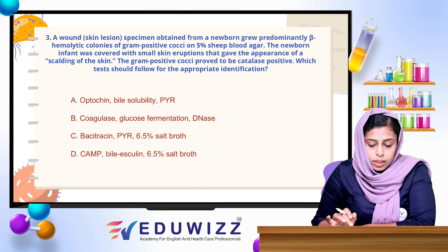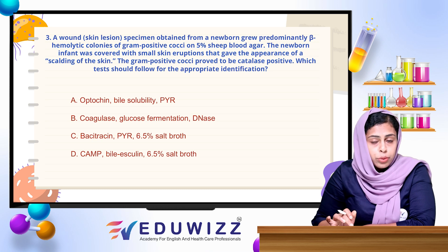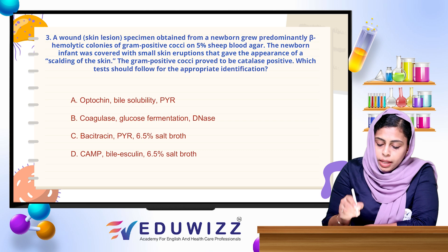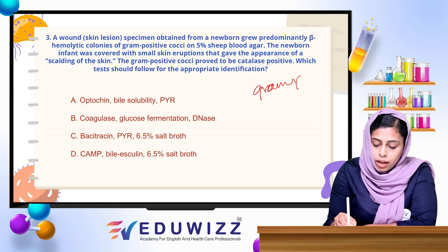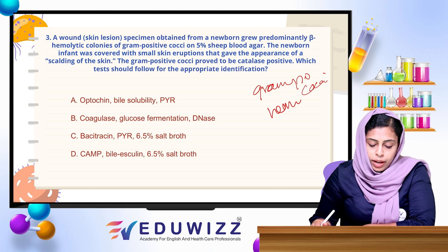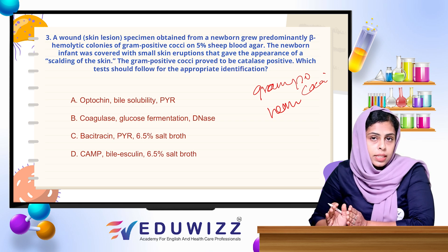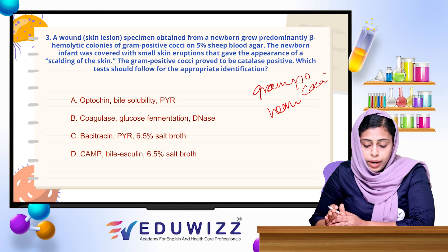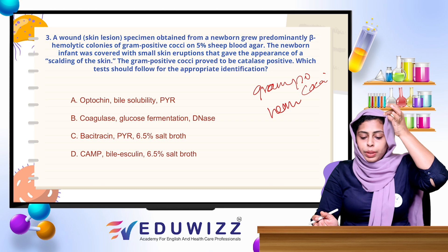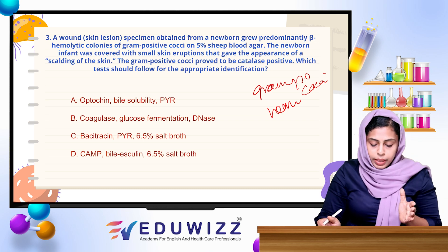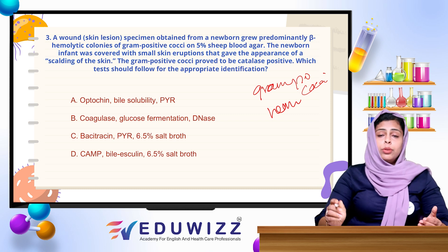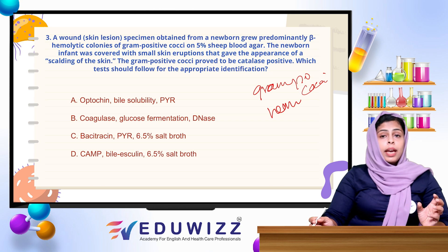Next question: a wound specimen obtained from a newborn shows predominantly beta-hemolytic colonies of gram-positive cocci on 5% sheep blood. The newborn infant was covered with small skin eruptions giving the appearance of scalding of skin. The gram-positive cocci provide a catalase-positive result, which should follow appropriate identification. This is the result of gram-positive cocci — it is the scaled skin syndrome and they are catalase positive.